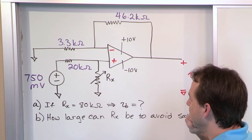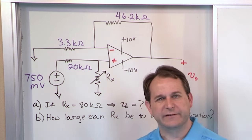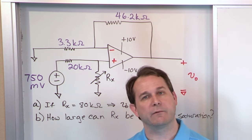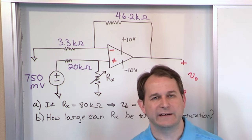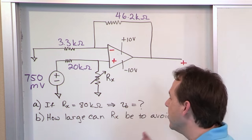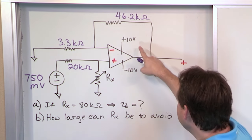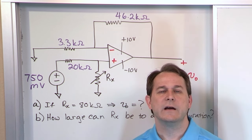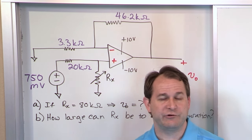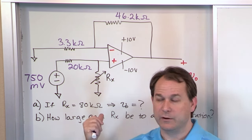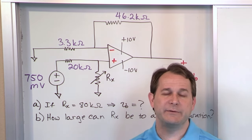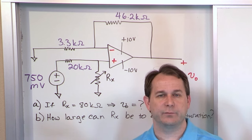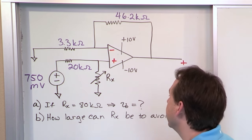Let's talk a little about the circuit qualitatively so you can get the thought process down, and then we'll jump in and you'll find this problem is really easy to solve. The op amp has plus or minus 10 volts as the power supplies. That tells you the saturation region means V out can only be between plus or minus 10 volts — that's the linear region. Anything outside of that is what we call saturated.